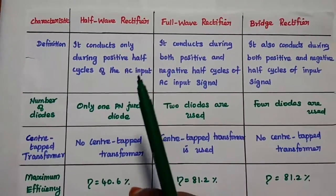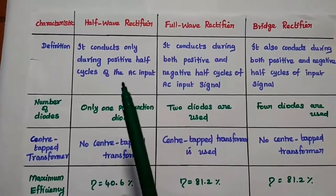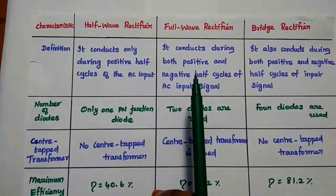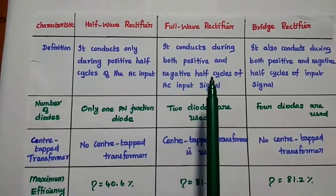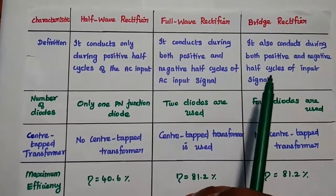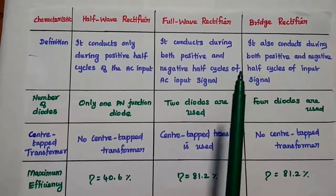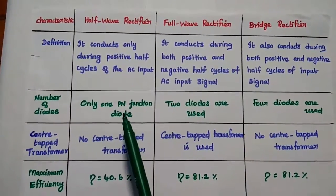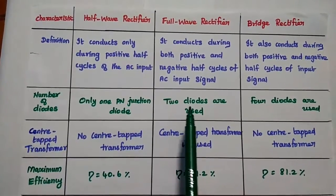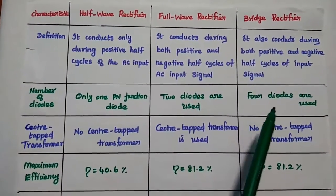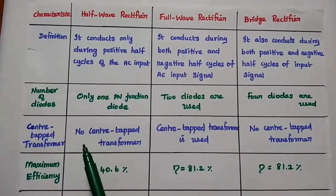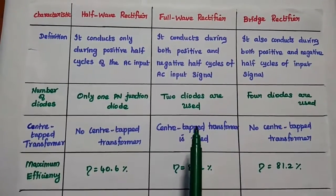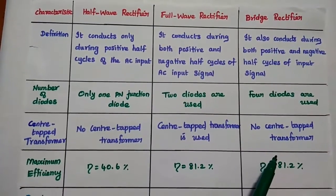Now let's compare the half wave rectifier, full wave rectifier, and bridge rectifier. The half wave rectifier conducts only during the positive half cycles of the AC input signal. The full wave rectifier and bridge rectifier both conduct during positive and negative half cycles. Only one PN junction diode is used in the half wave rectifier; two diodes are used in the full wave rectifier; and four diodes are used in the bridge rectifier. No center tap transformer is required for the half wave or bridge rectifier, but a center tap transformer is used in the full wave rectifier.